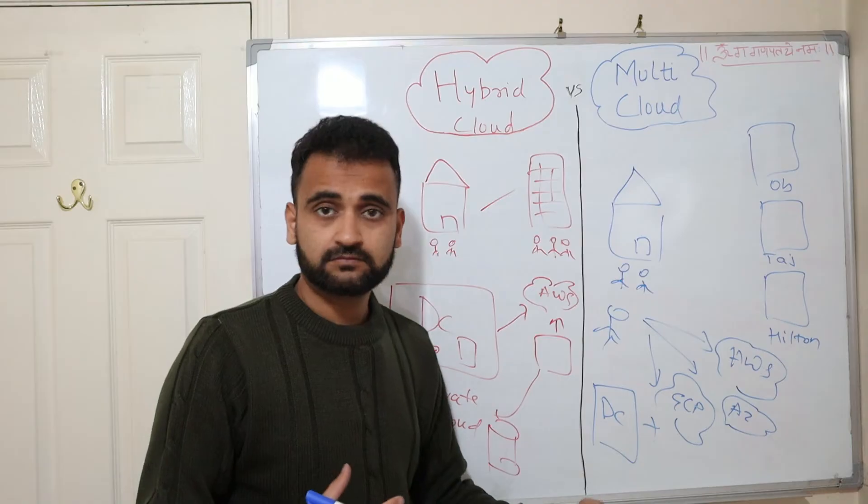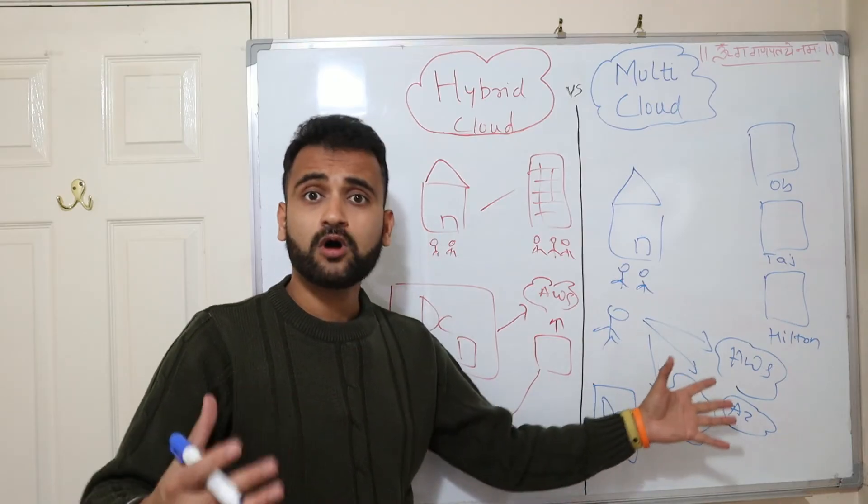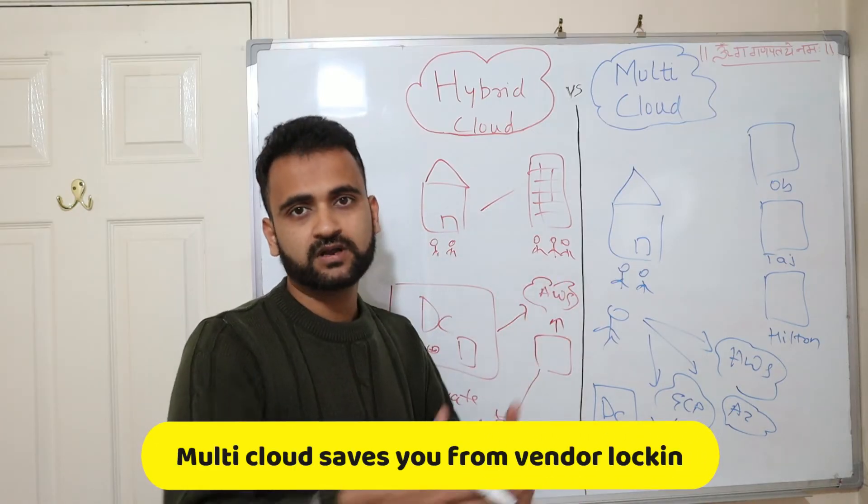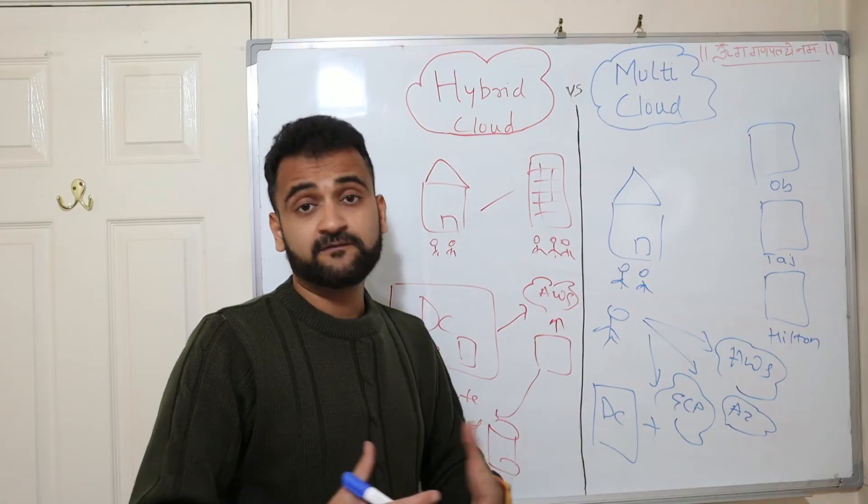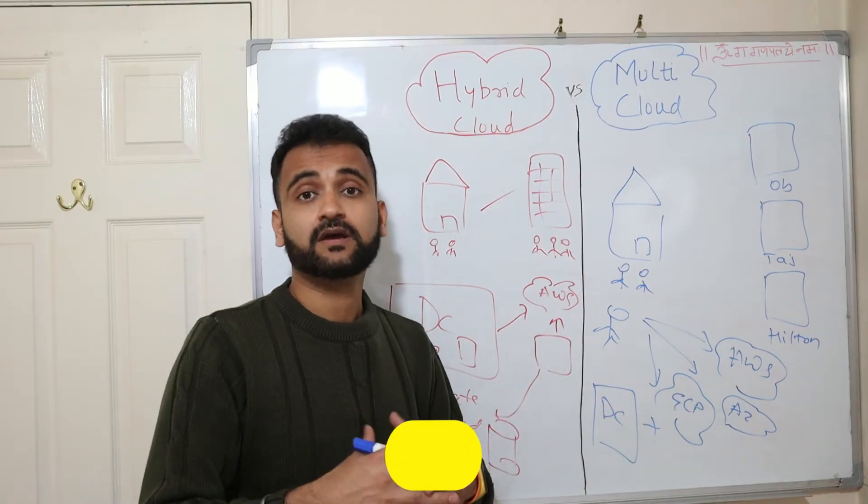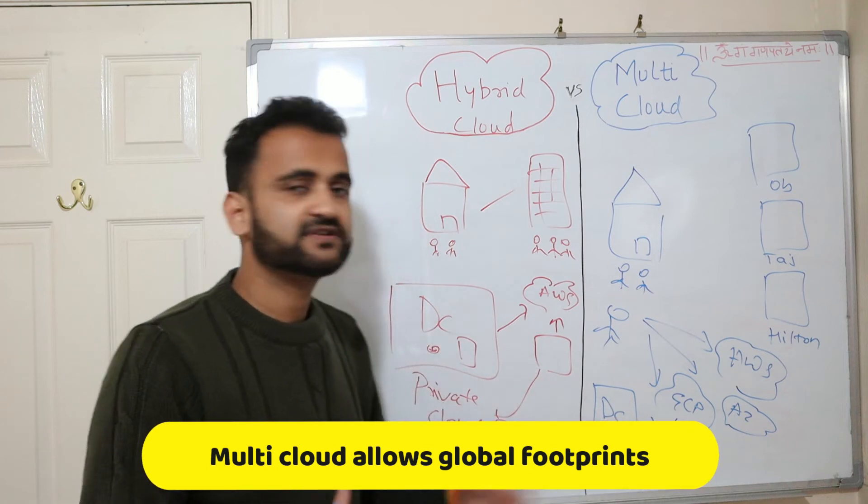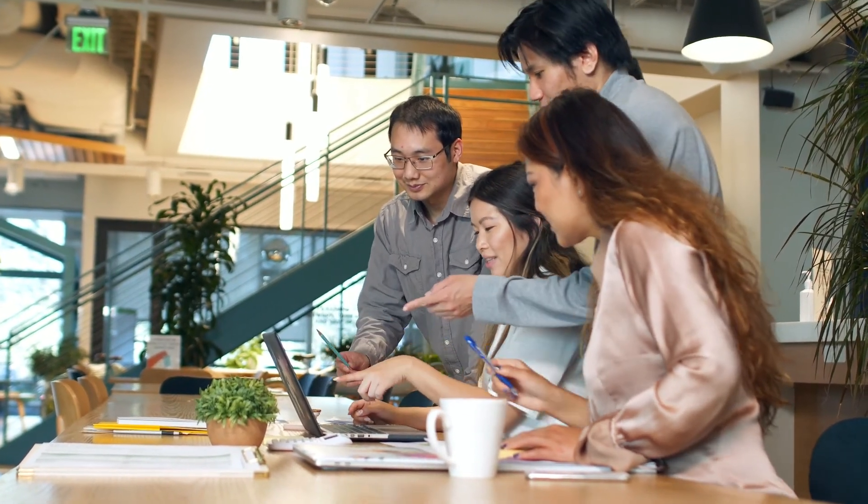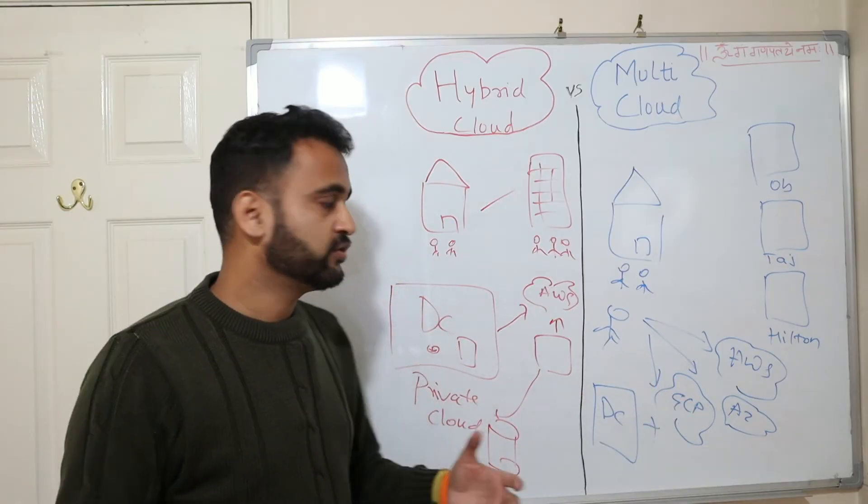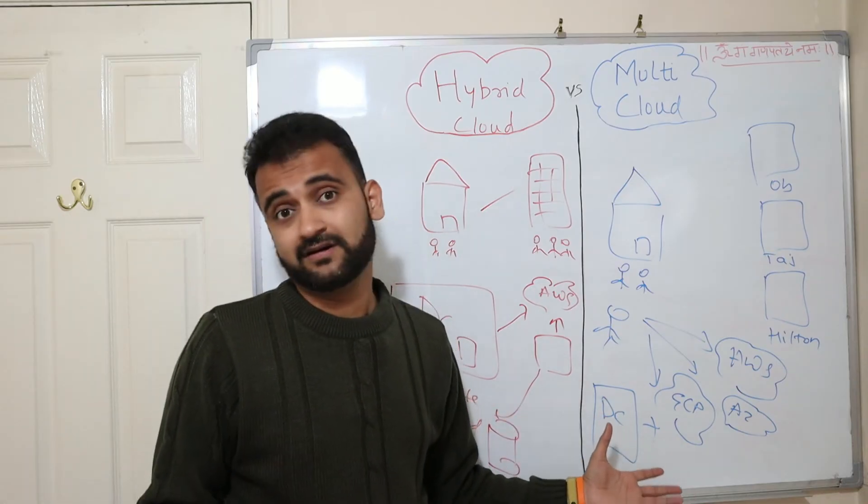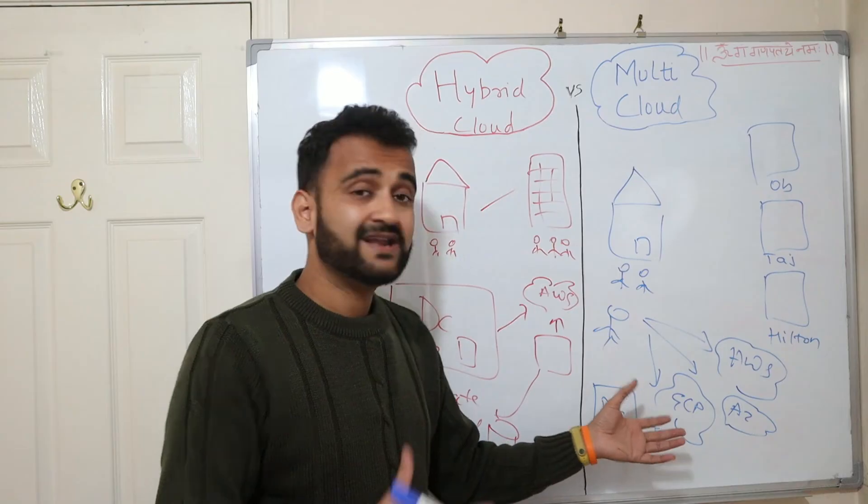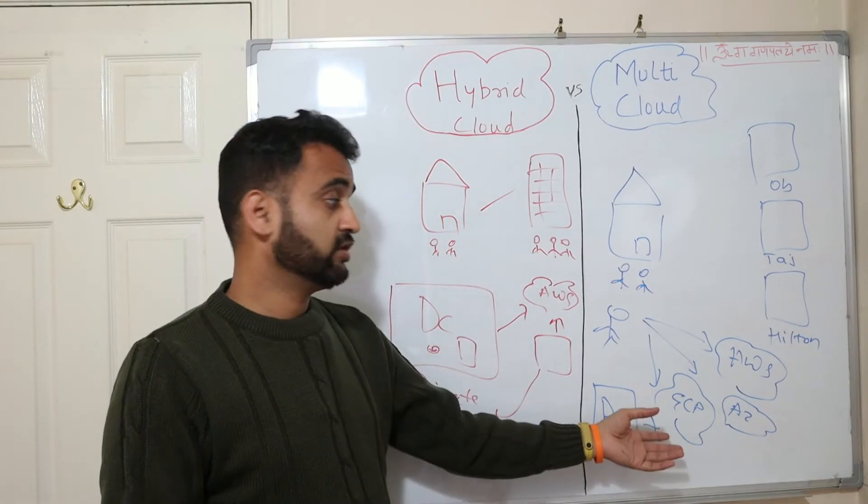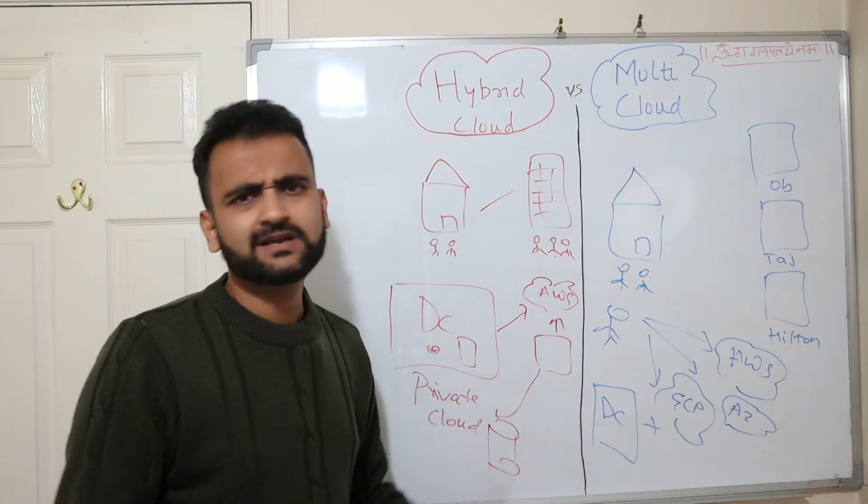Secondly, you are safe from a vendor lock-in kind of situation where you are not heavily dependent on one particular cloud provider. Thirdly, if you are a global company, it gives you footprints, it gives you that flexibility to access these services globally. For example, Google Cloud is not there in China, so you could use AWS. Similarly, there would be other places where Google would be more relevant because, suppose performance-wise, Google has the data center closest to that particular office which you have. So in that sense, you could use GCP. So there are multiple use cases.